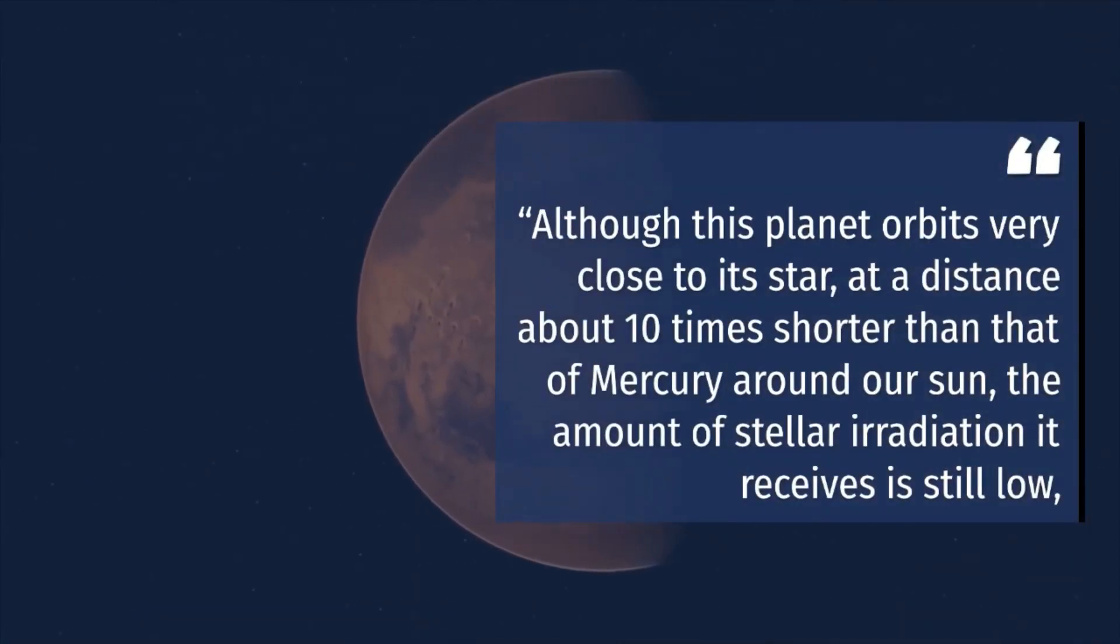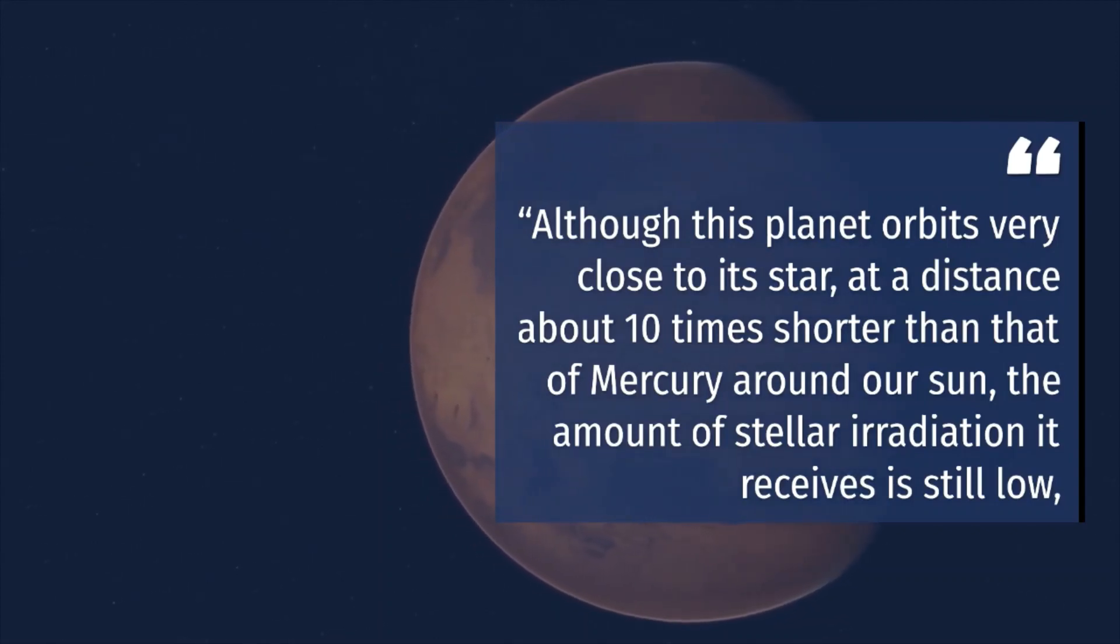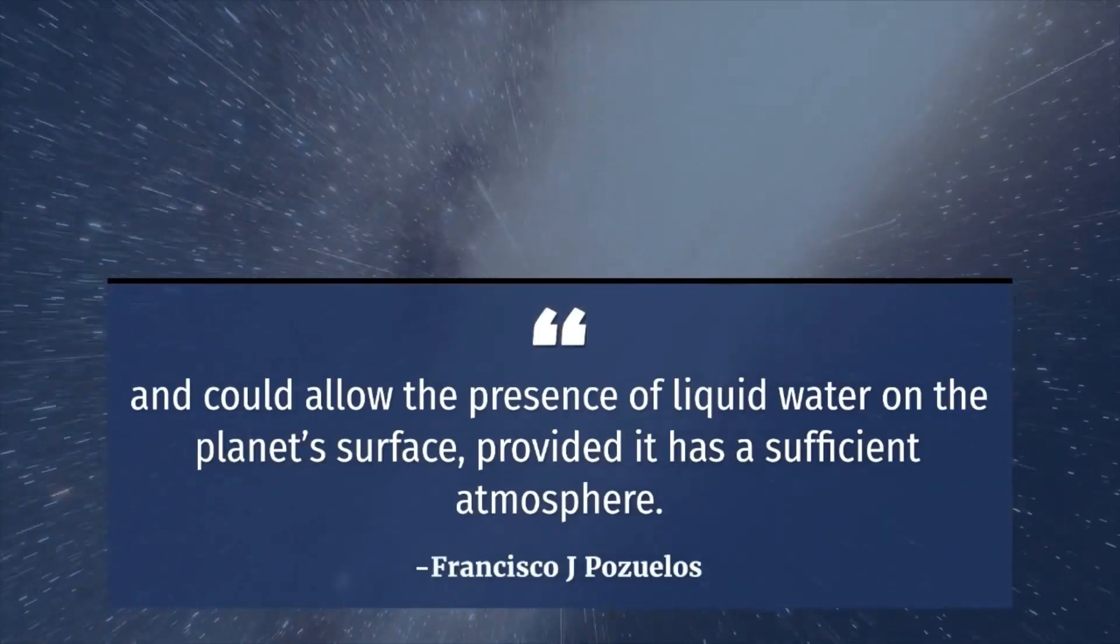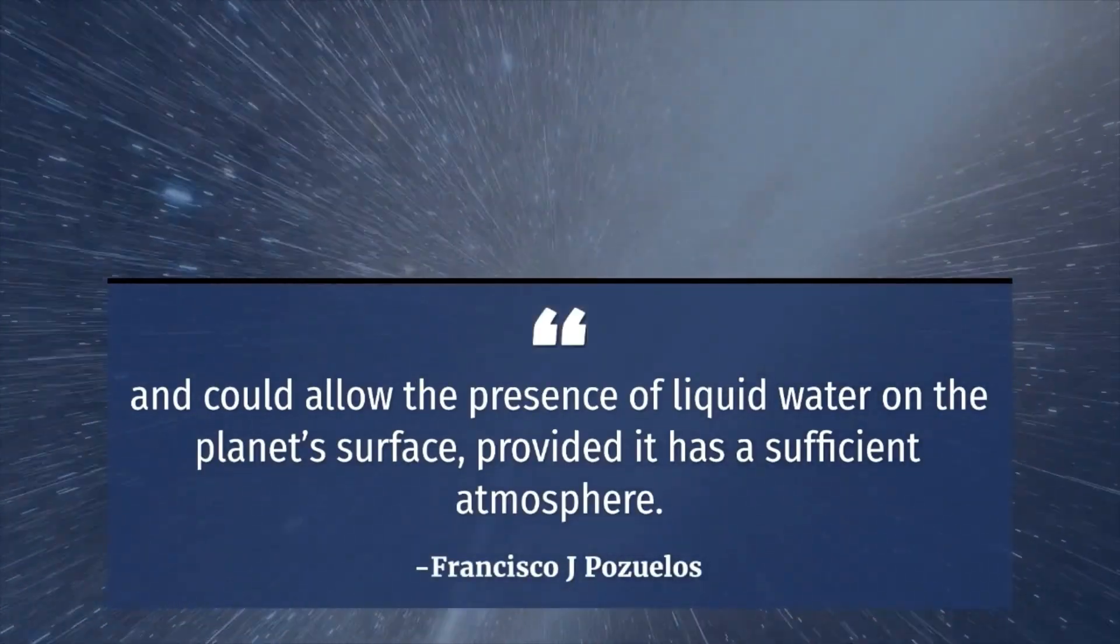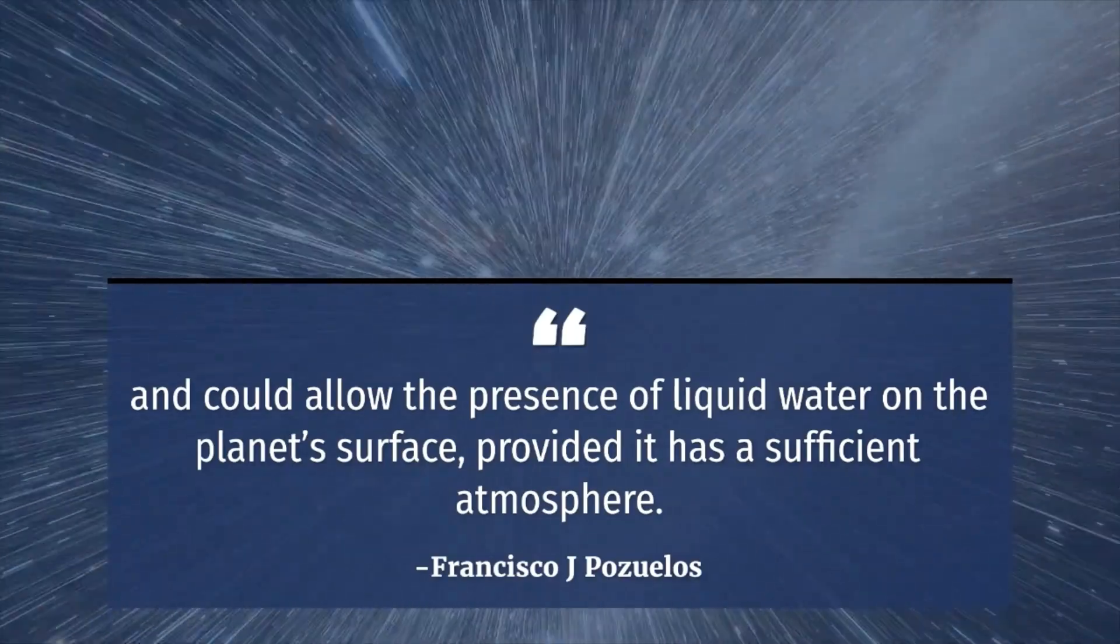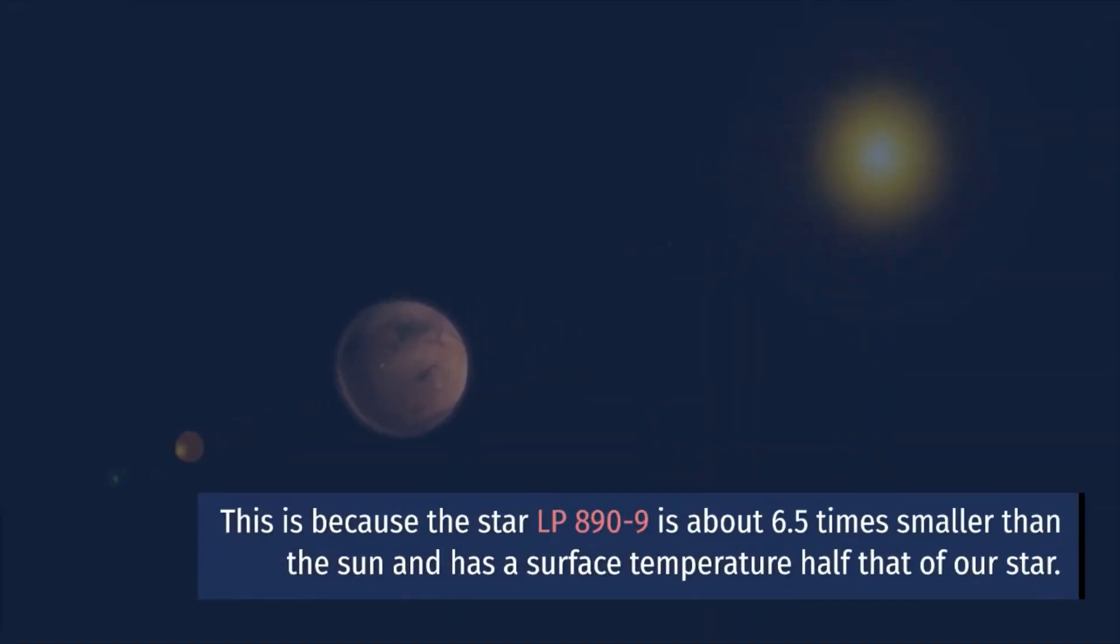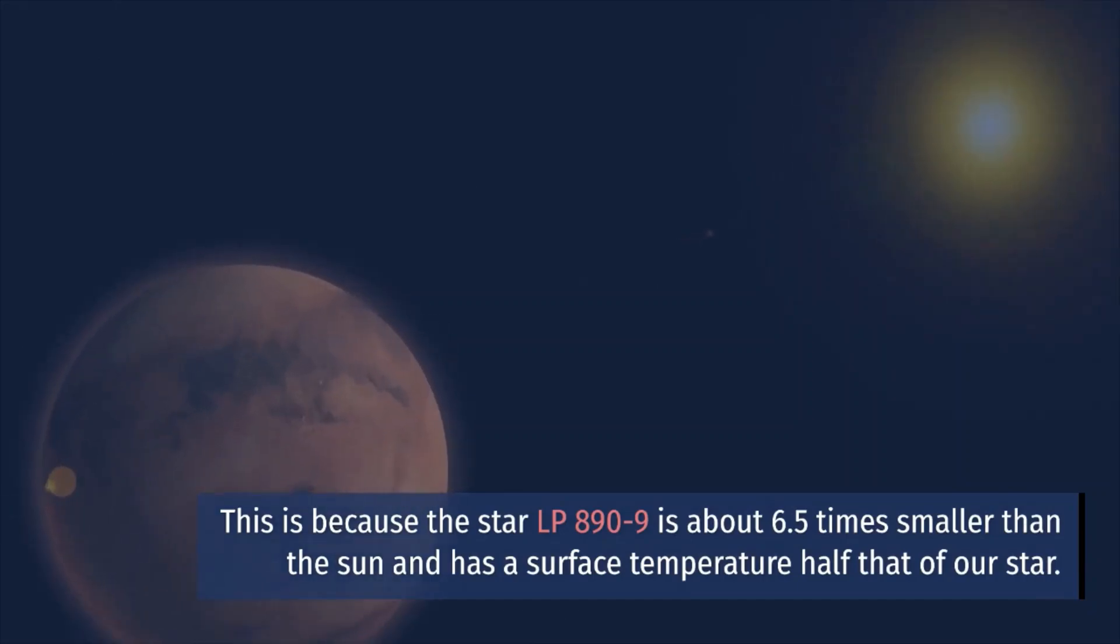Although this planet orbits very close to its star, at a distance about 10 times shorter than that of Mercury around our sun, the amount of stellar irradiation it receives is still low and could allow the presence of liquid water on the planet's surface, provided it has a sufficient atmosphere. This is because the star LP 890-9 is about 6.5 times smaller than the sun and has a surface temperature half that of our star.